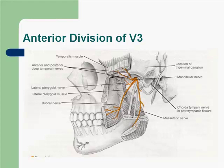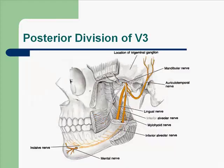Here is the anterior division of V3 and here is the posterior division of the mandibular nerve.